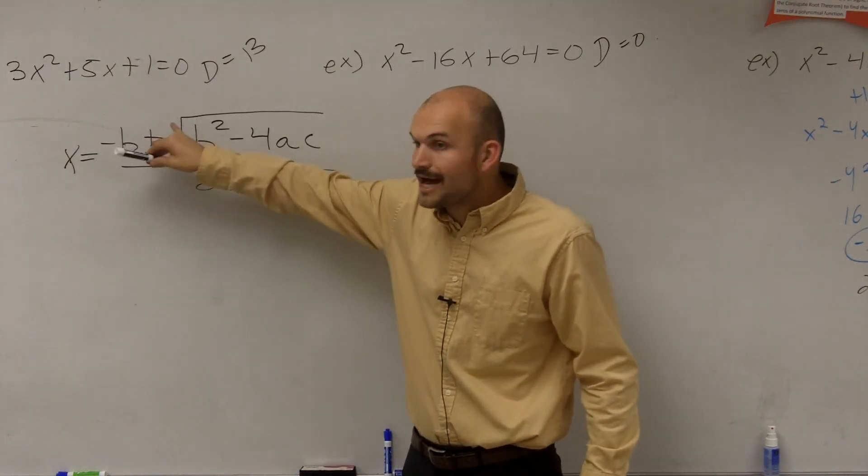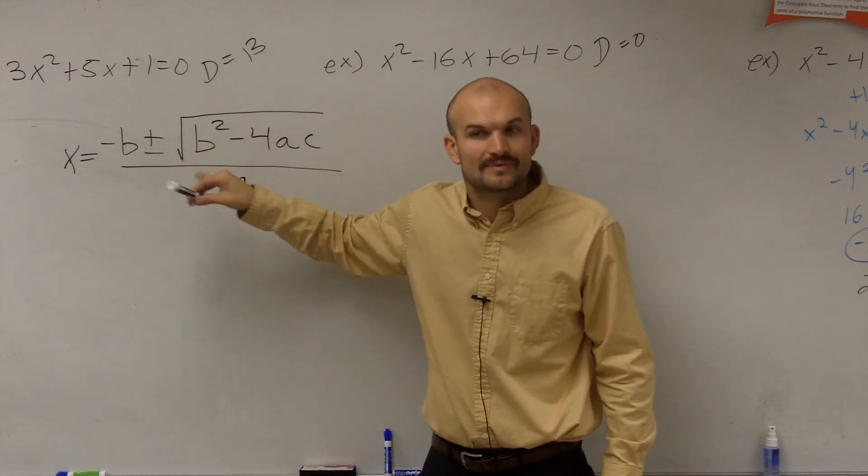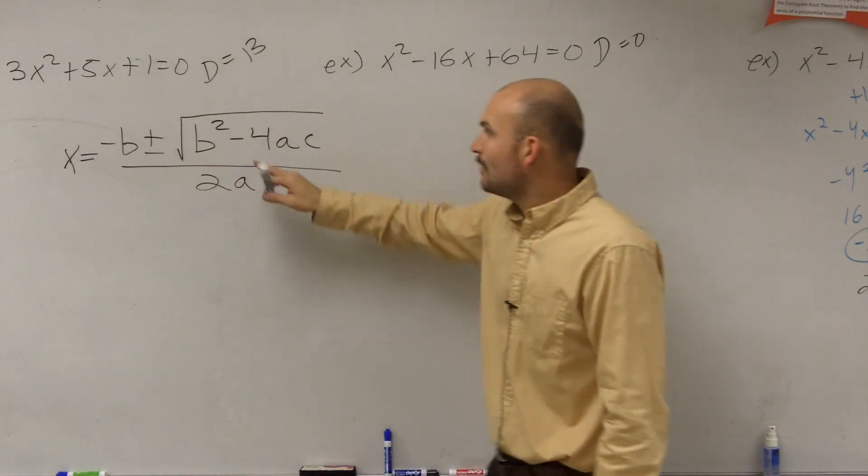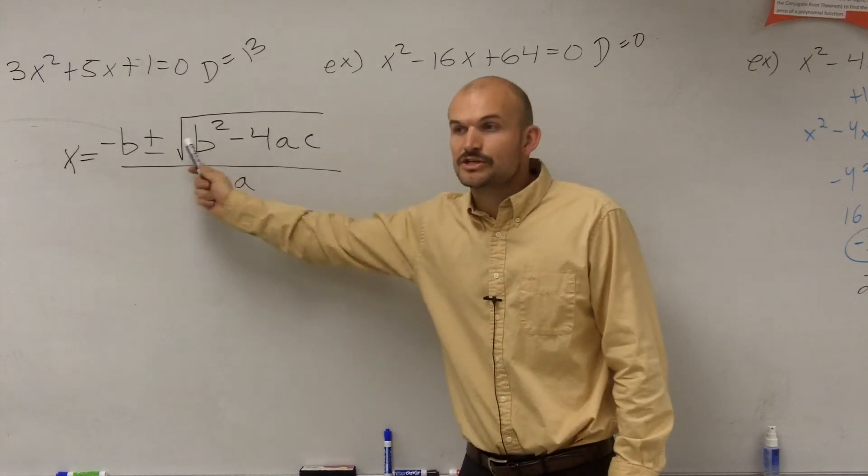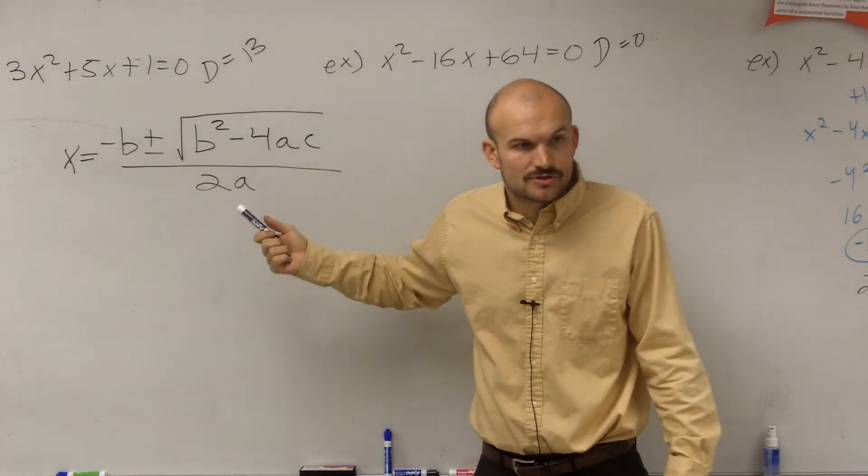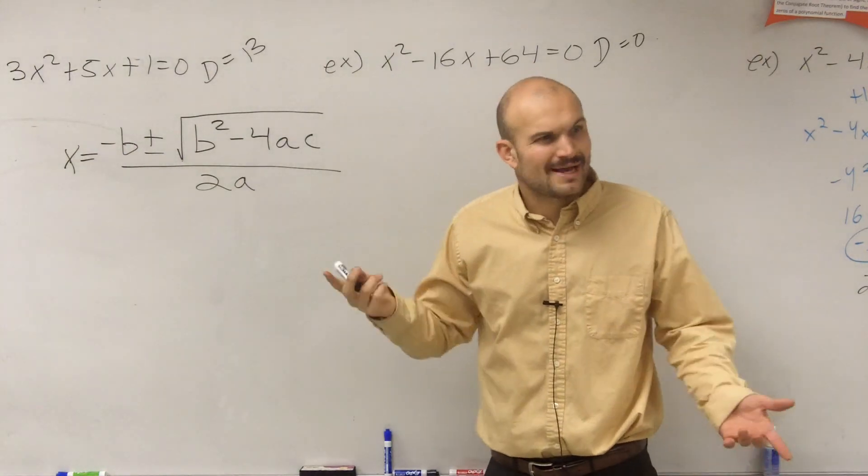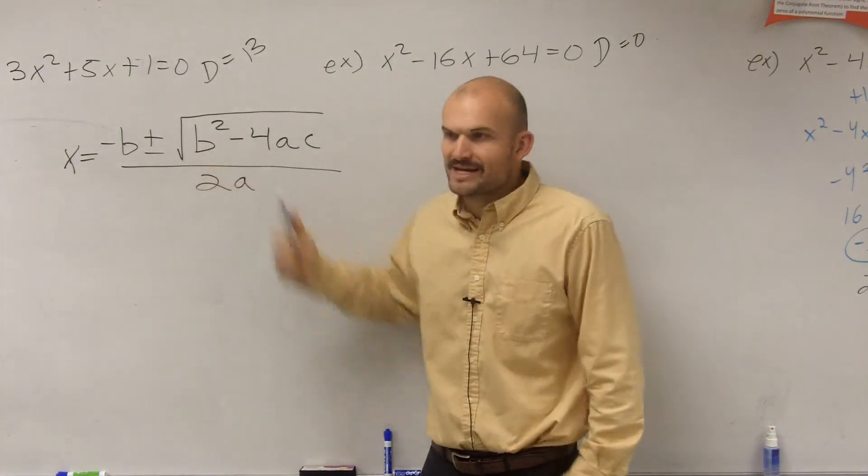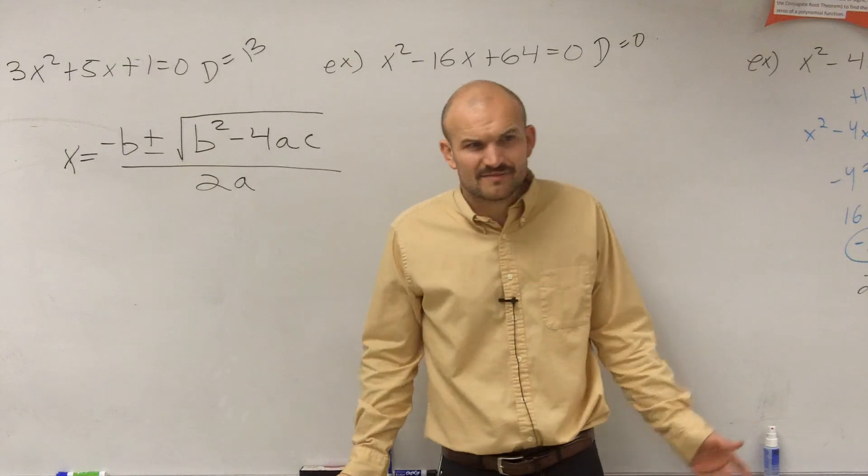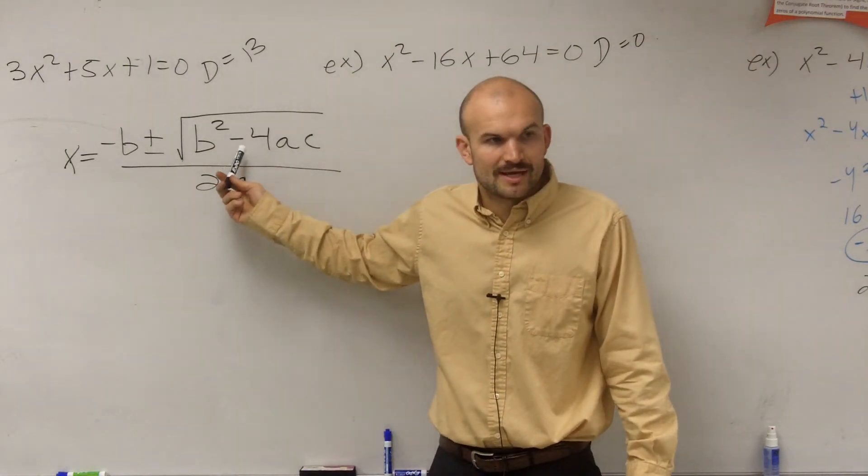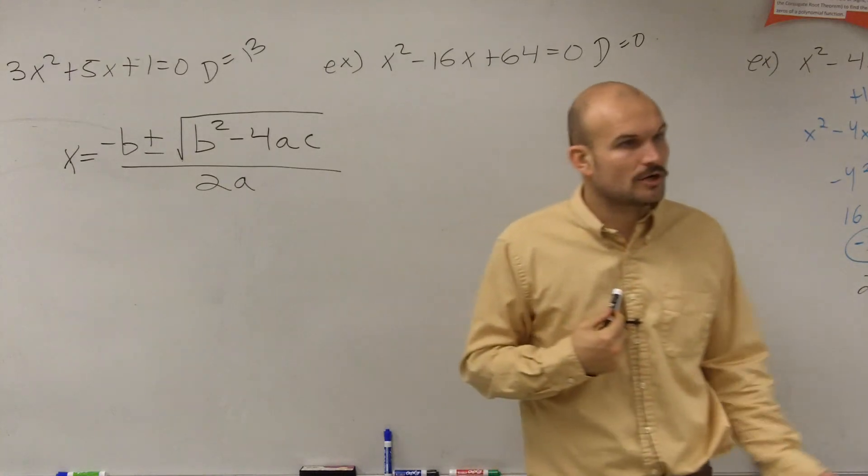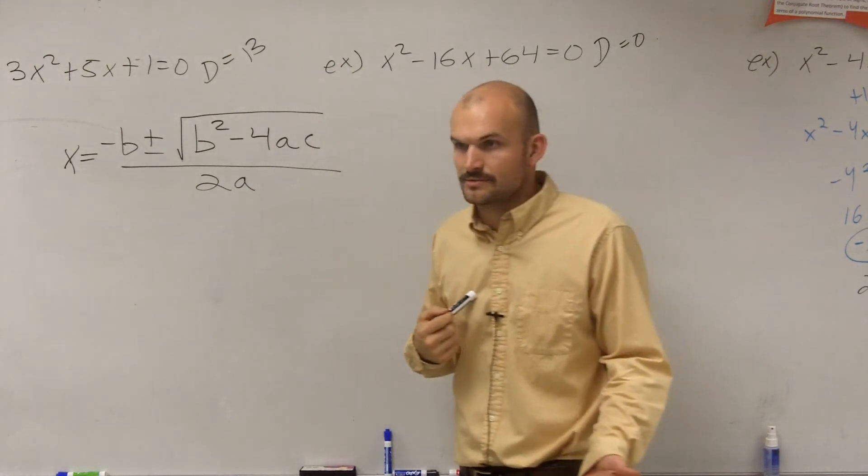So what you're going to notice is we always have two values built in, except for what happens when this is equal to 0, right? We said if your discriminant is equal to 0, how many solutions do you have? One. Why is that? Well, can you have plus or minus 0? Can 0 be positive or negative? No. So therefore, that's why when you have 0 as your discriminant, you're only going to have one real rational root.